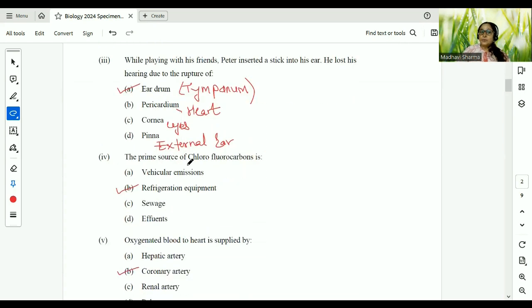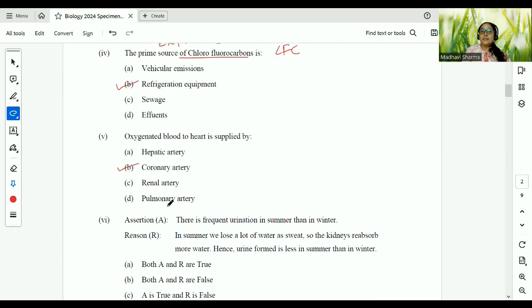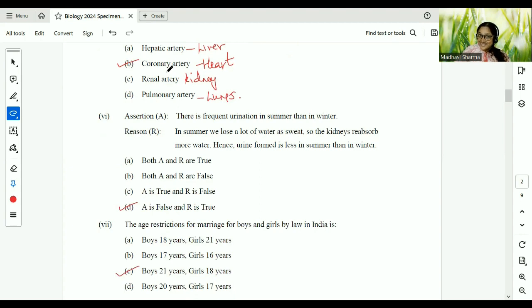The prime source of chlorofluorocarbon which is also called as CFC is refrigeration equipment. Vehicular emissions is CO, sewage is water, effluents is also water. Oxygenated blood to the heart is supplied by coronary artery. As we all know hepatic is related to liver, coronary is to the heart, renal is to the kidney, and pulmonary is to the lungs. So answer for this is heart, that is coronary artery.